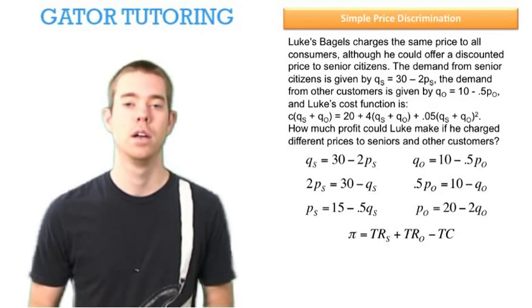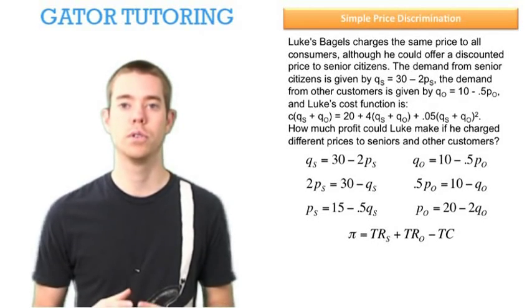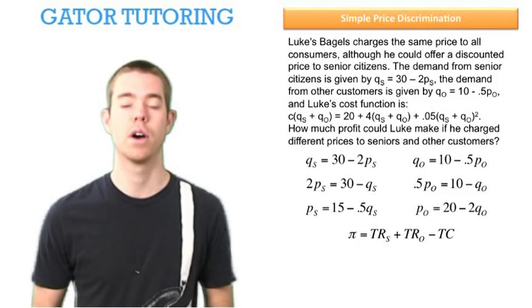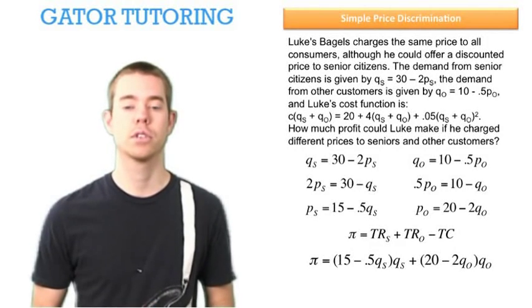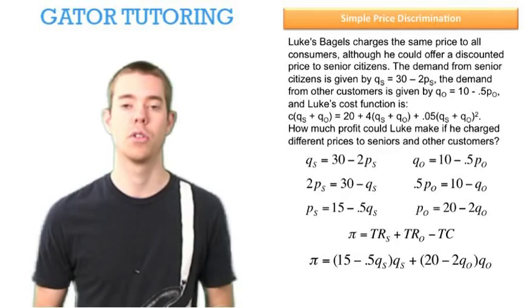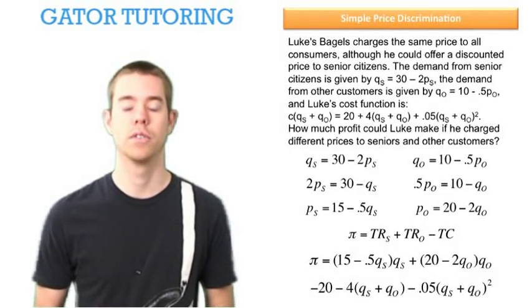Now we're ready to write profit. Profit is the total revenue of seniors plus the total revenue of other people minus the total cost. Total revenue of seniors is price times quantity for seniors, total revenue of other people is price times quantity for others, minus the total cost of the combined customers.